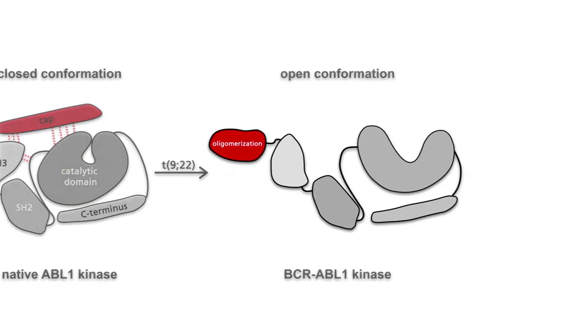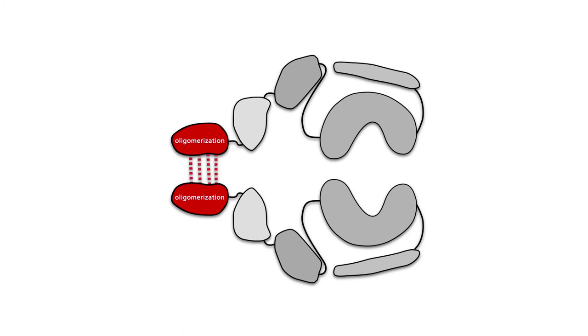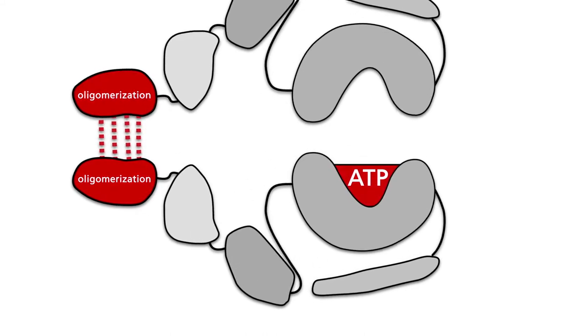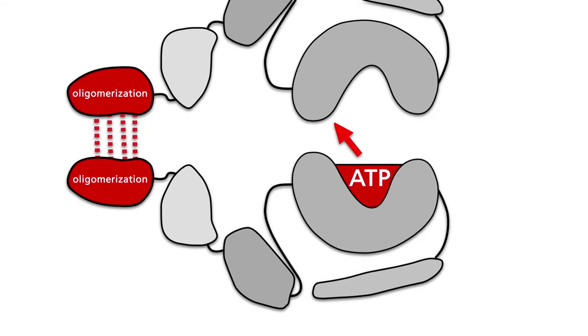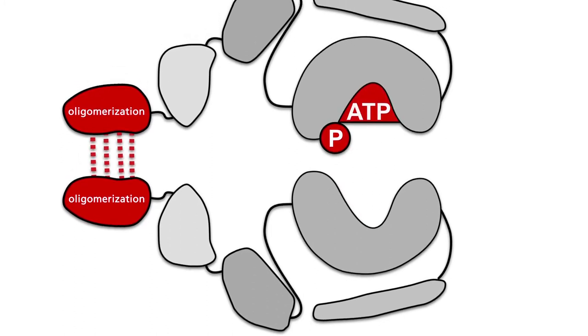There are two mechanisms that stabilize the open conformation of the catalytic domain. First, two monomers of the BCR-ABL kinase dimerize via hydrogen bonds. Second, the open conformation is further stabilized and the enzymatic activity is increased by autophosphorylation of each monomer by the other.